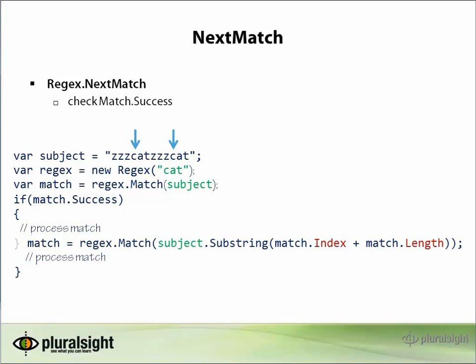Then reapply the regex to that substring. But that's a lot of code for such a simple task, and this code snippet doesn't even take into account the empty matches. Empty matches are matches that are successful but have a zero length. Well, the regex next match method does all that for you, including handling the empty match case.